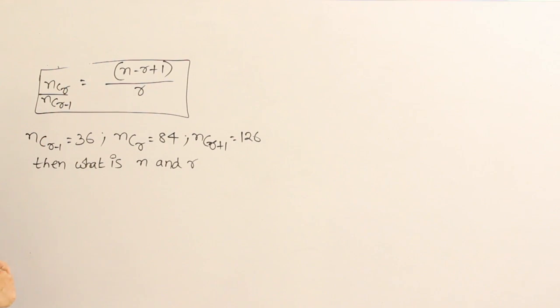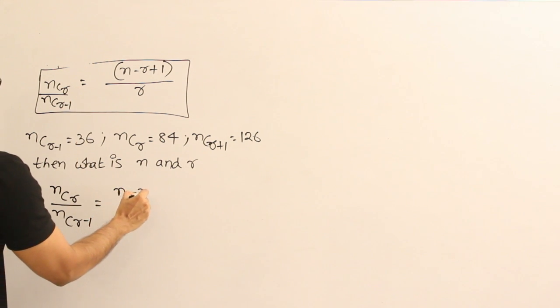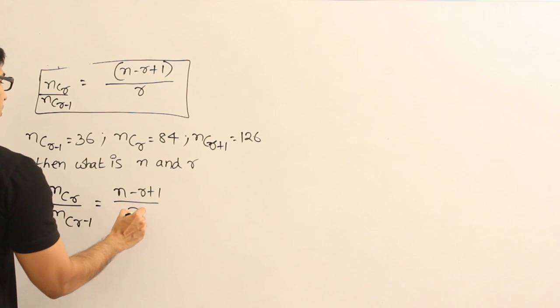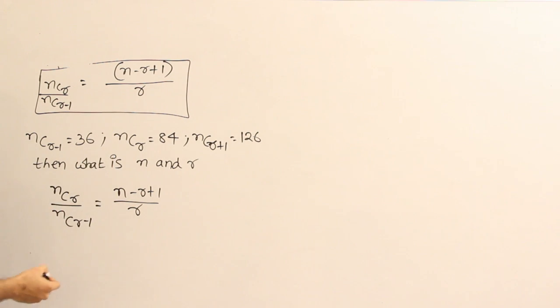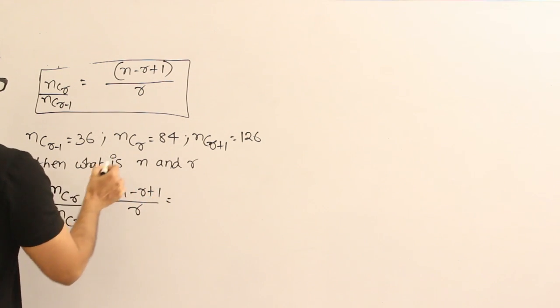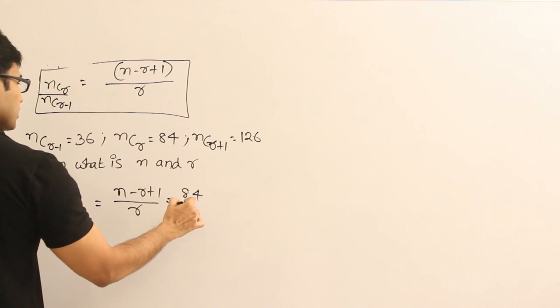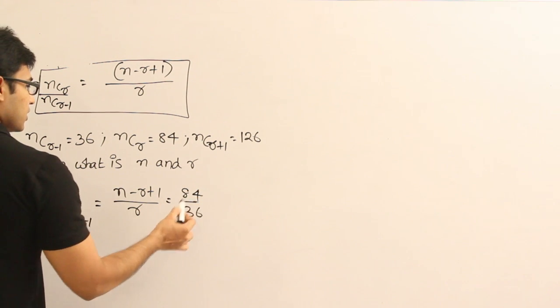Now let's see how to write it. So if I can write it in terms of nCr by nC_(r-1), then it will be easy to analyze. So nCr divided by nC_(r-1), we know that it is (n-r+1) divided by r, just as we have seen, equal to nCr value is 84 divided by 36.